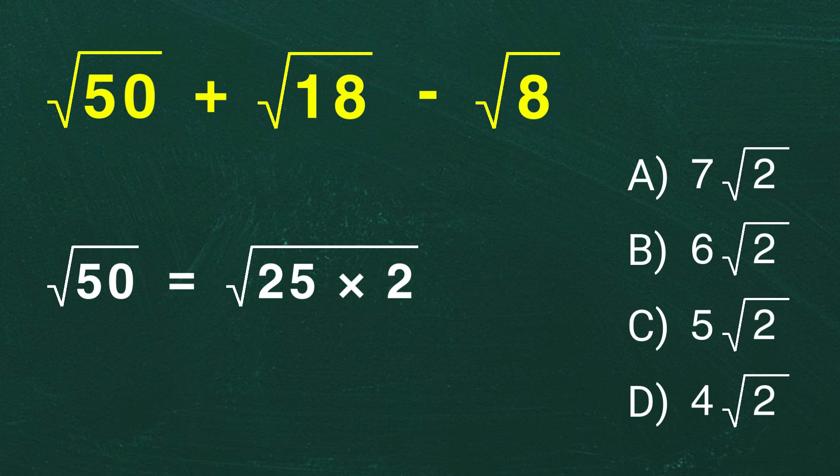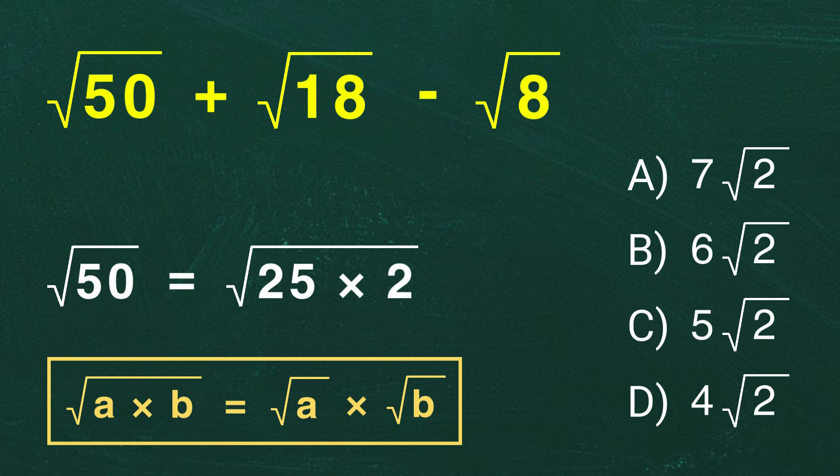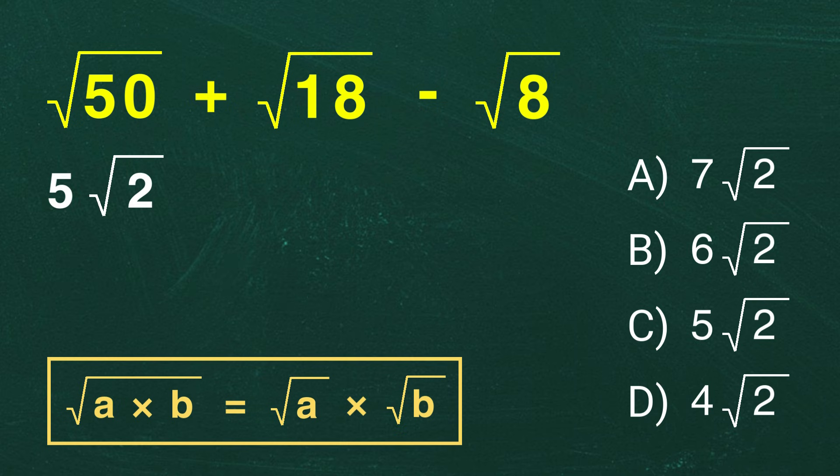When you have a square root of a product like square root of a times b, you can split it as root of a multiplied by root of b. So we can rewrite square root of 50 as the square root of 25 times the square root of 2. Since the square root of 25 is 5, this becomes 5 root 2. Got it? We have simplified the square root of 50 to 5 root 2.